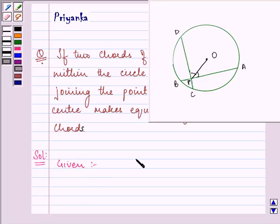We are given that the chords are equal to each other. That means AB is equal to CD. I need to prove that angle.